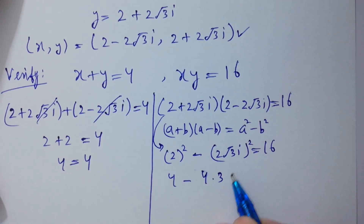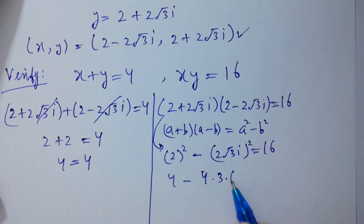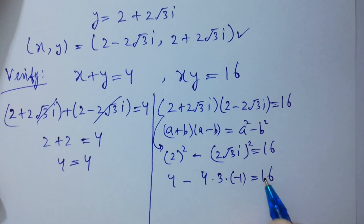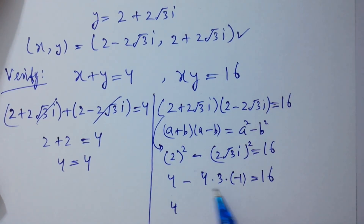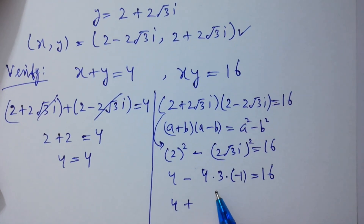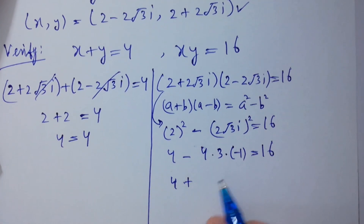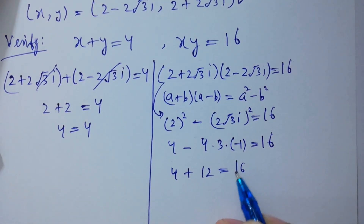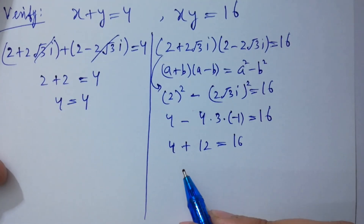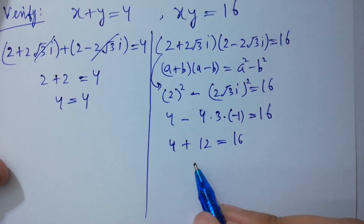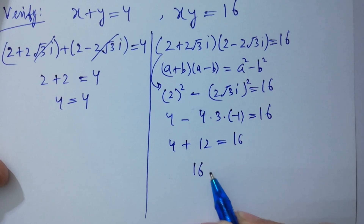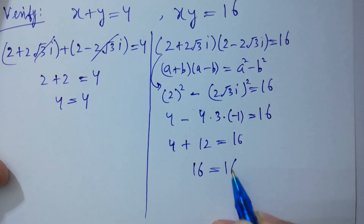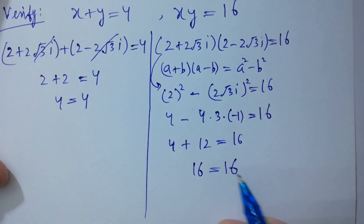So xy equals 2 squared minus (2 square root of 3 i) squared, which gives 4 minus 4 times 3 times i squared. Since i squared equals minus 1, we get 4 minus minus 12 equal to 4 plus 12 equal to 16. So 16 equal to 16.